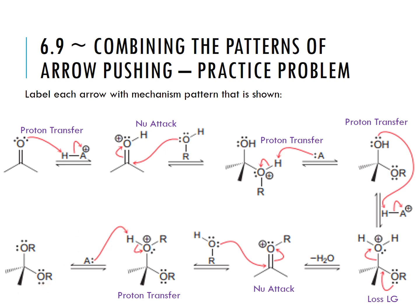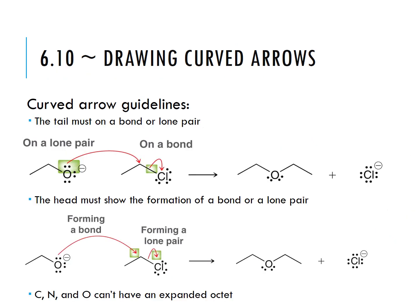This section talks about guidelines for drawing curved arrows. The tail of the arrow has to be on a bond or a lone pair — it has to start at the electron source. The head of the arrow shows the formation of a new bond or a lone pair. Going from a lone pair onto a carbon shows a new bond forming between oxygen and carbon; going from a bond onto an atom shows a bond breaking and turning into a new lone pair.